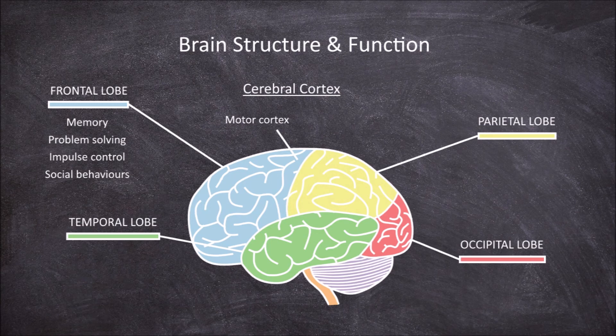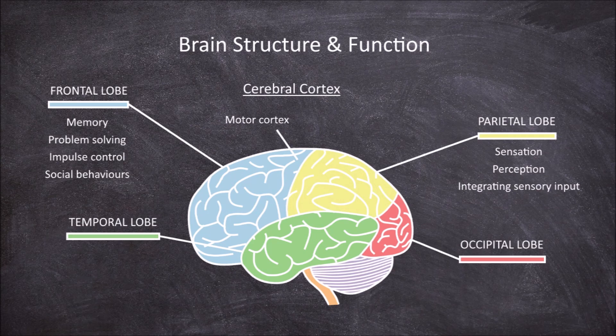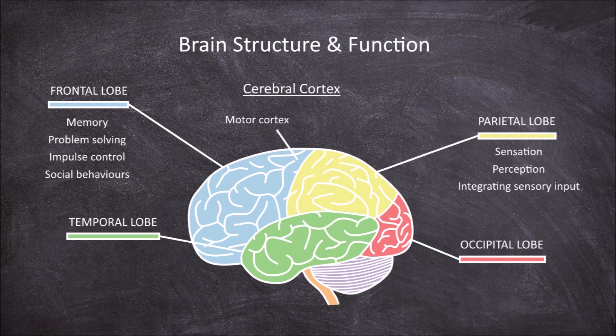The parietal lobes are posterior to the frontal lobes. The main functions of the parietal lobes are in sensation, perception, and integrating the sensory input from the body. The anterior portion of the parietal lobes are known as the somatosensory cortex.